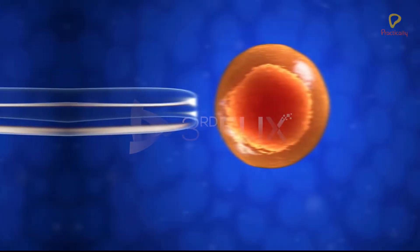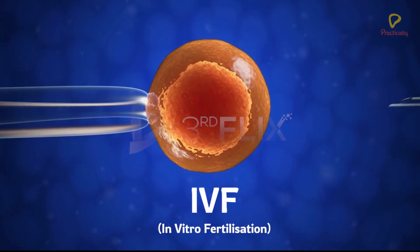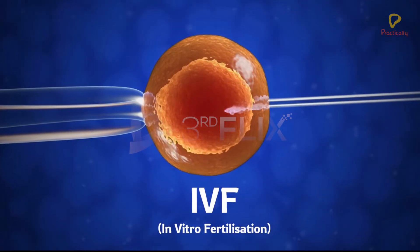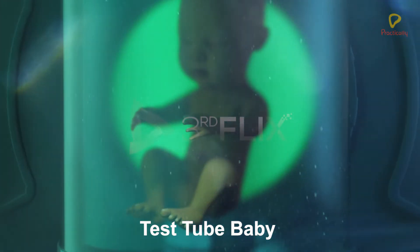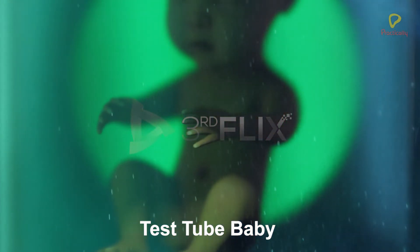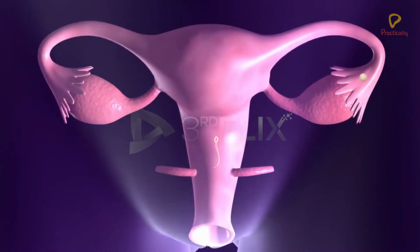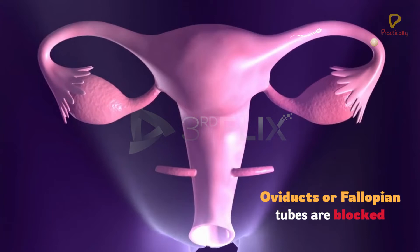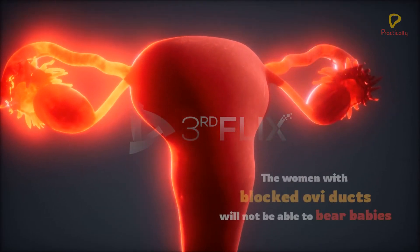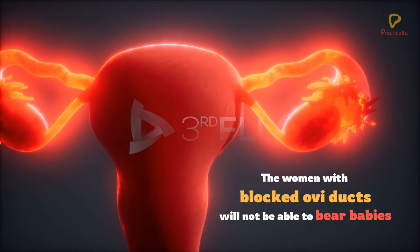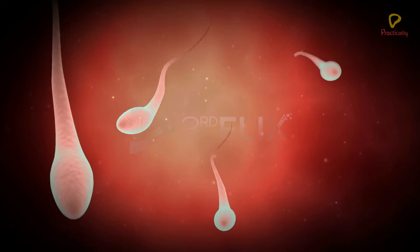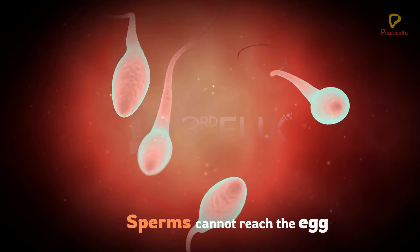IVF — in vitro fertilization. We all might have heard about test tube babies. In some women, the oviducts or fallopian tubes are blocked. As we learned, fertilization takes place in fallopian tubes. The women with blocked oviducts will not be able to bear babies, because sperms cannot reach the egg for fertilization.